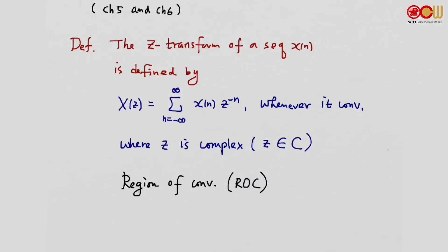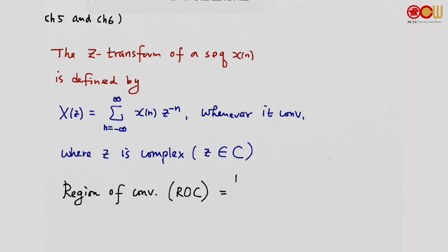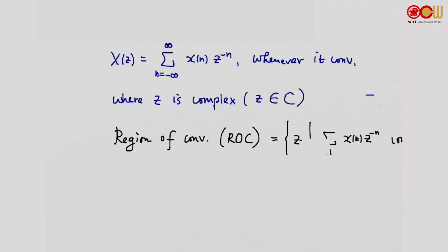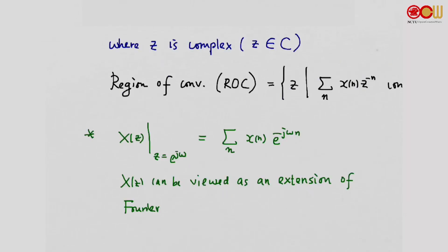We collect all the z for which the Z-Transform converges into one set — the collection of all z for which the summation converges. We call it the region of convergence. We may notice that when we replace z with e to the j omega, this becomes the Fourier transform. So X(z) can be viewed as an extension of the Fourier transform to the complex Z-plane.